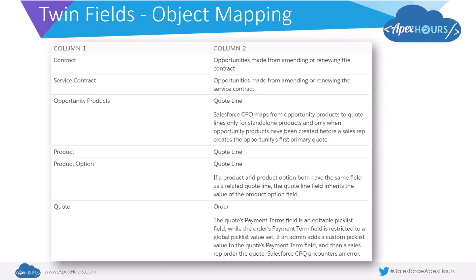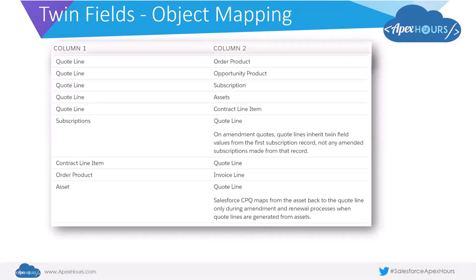This table is a snapshot from the Salesforce documentation showing the mapping between the source object and the target object for twin fields in Salesforce CPQ. Column one is where the source data is captured, and column two is the target object where the field gets updated. Like in our example, we created a field on product and it got populated in quote line — there are many other examples here. One key area is quote line, which maps to multiple different objects within Salesforce CPQ.